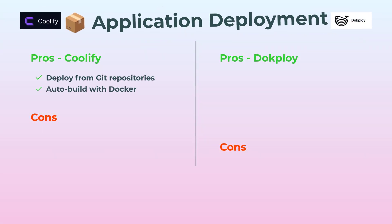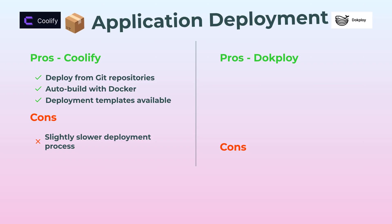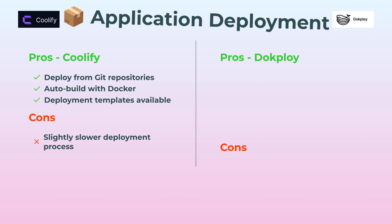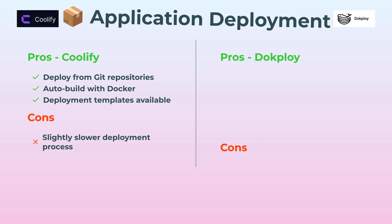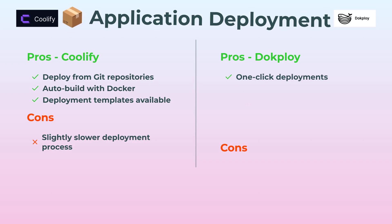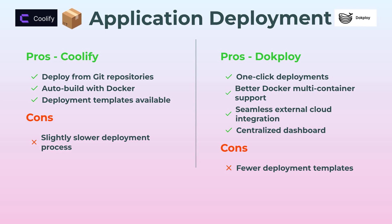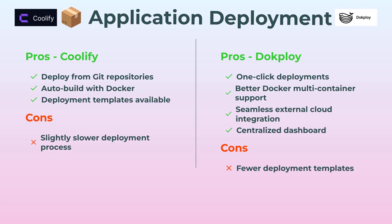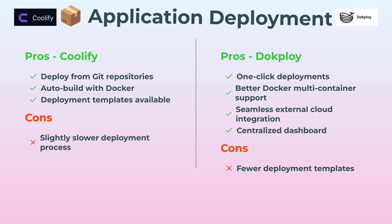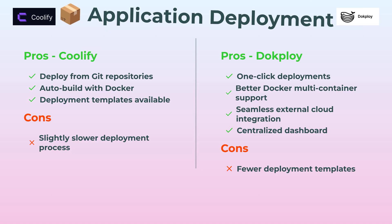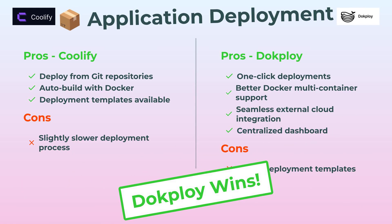On to application deployment. With Coolify, you deploy straight from Git, auto-build with Docker, and even grab deployment templates — super versatile, but the process is a tiny bit slower. DocPloy is all about speed: one-click deployments, way better with multi-container Docker apps, and seamless integration with external clouds, plus a centralized dashboard. The only trade-off is fewer templates. Still, for quick modern deployments, DocPloy wins out.